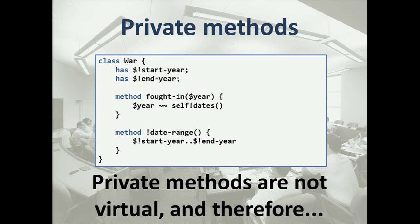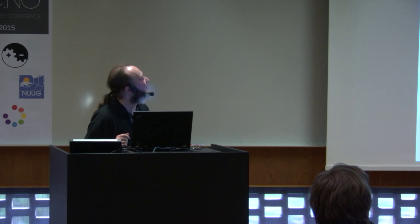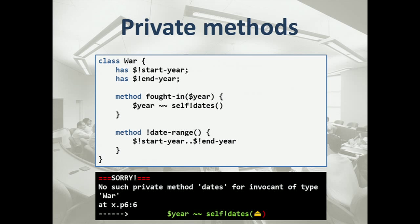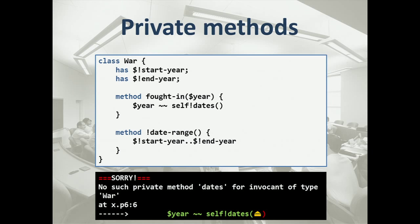Private methods are the same — we don't make them virtual, and therefore if you call a private method incorrectly, we'll actually tell you about that at compile time too. Private things in a class are only visible inside of the class, so we try to catch all the things we can as we compile.